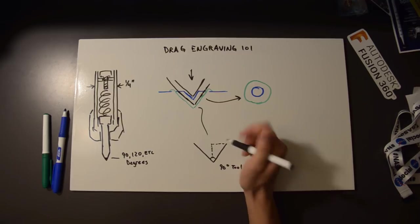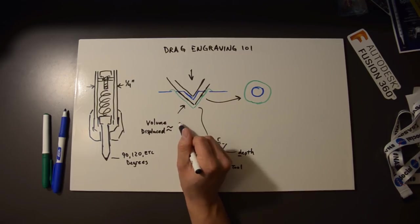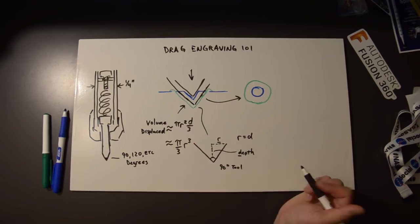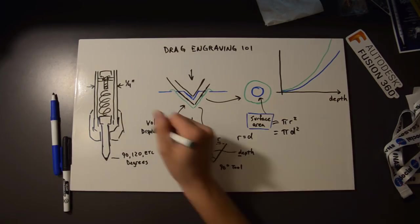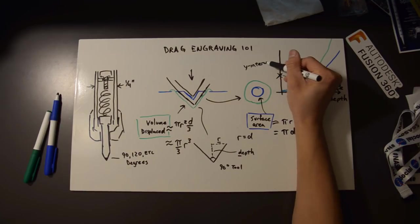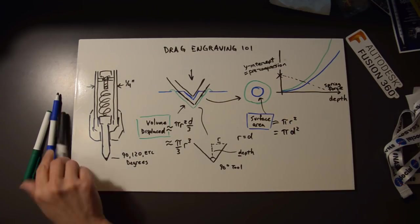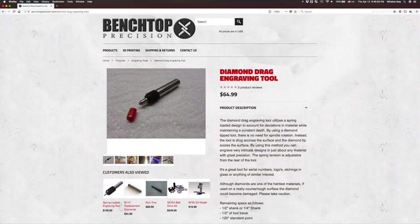The geometry of this process means that the volume of material moved increases exponentially with depth, as does the force required to cause this. Because springs act linearly, a drag bit will very rapidly hit an equilibrium point, so the engraving process can almost be described as self-limiting. Let's put that to the test in the garage.